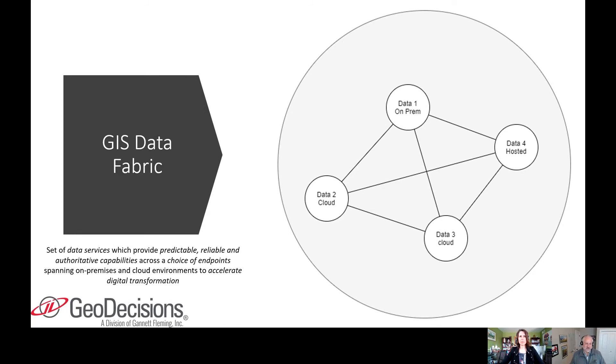A set of data services would provide predictable, reliable, and authoritative capabilities. What that means is as you hook to these services, they're going to be fast, they're going to be authoritative, people have confidence that the data is going to be right, and the uptime is going to be almost 100%.